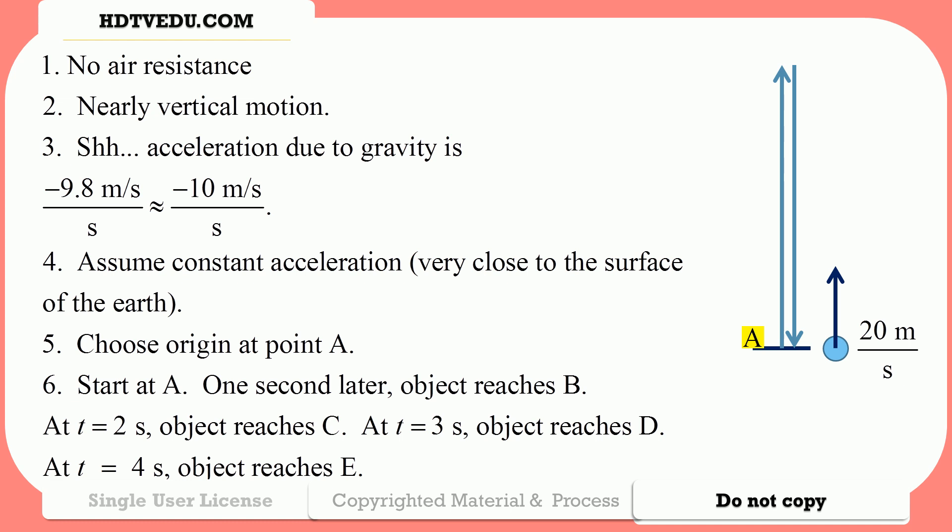We are also told to assume a few things. There is no air resistance. That it is nearly vertical motion. That the acceleration due to gravity is negative 9.8 meters per second per second.